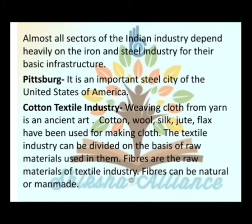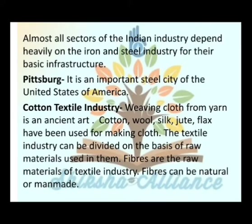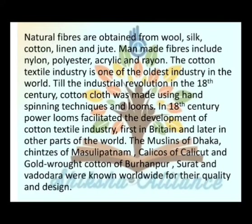Cotton textile industry — weaving cloth from yarn is an ancient art. Cotton, wool, silk, jute, and flax have been used for making cloth. The textile industry can be divided on the basis of raw materials used. Fibers are the raw materials of the textile industry and can be natural or man-made. Natural fibers are obtained from wool, silk, cotton, linen, and jute. Man-made fibers include nylon, polyester, acrylic, and rayon.